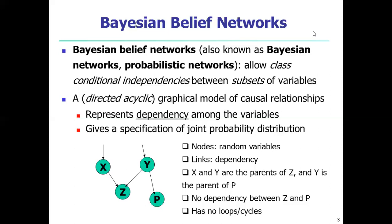Because x and y are the parents of z, and y is the parent of p, it shows a clear family structure. This represents the dependency among the variables and gives the specification of the joint probability distribution. There is no dependency between z and p because z is a descendant of p — p is like the grandparent of z. So there are no direct cycles between z and p, but there is connectivity between x and y because x and y are the parents of z.